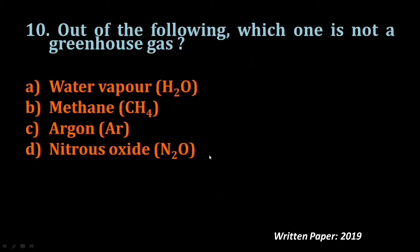Question number ten: Out of the following, which is not a greenhouse gas? Water vapor is a greenhouse gas, methane is a greenhouse gas, nitrous oxide is a greenhouse gas. What remains is argon — argon is not a greenhouse gas. So the answer is argon.